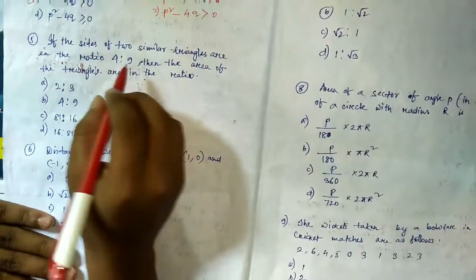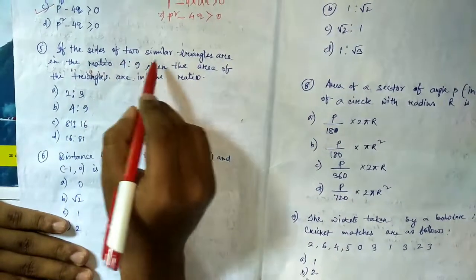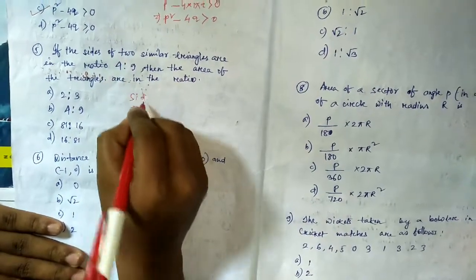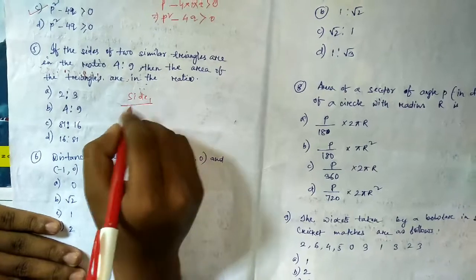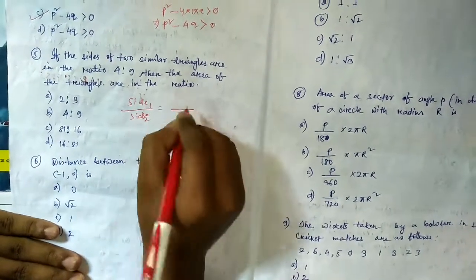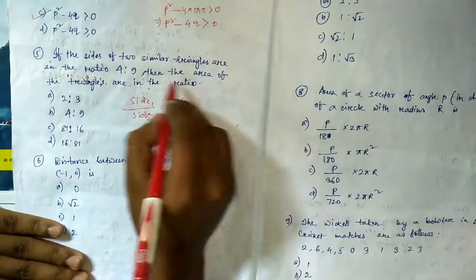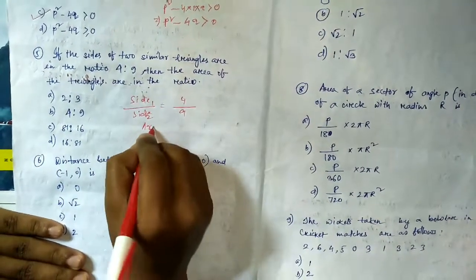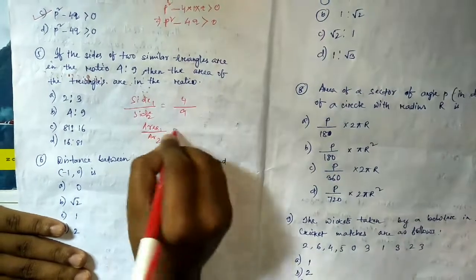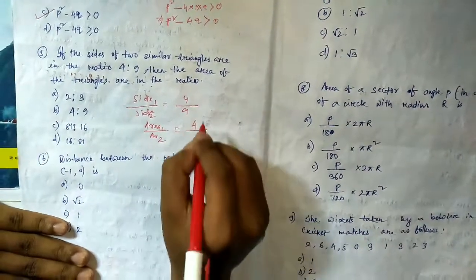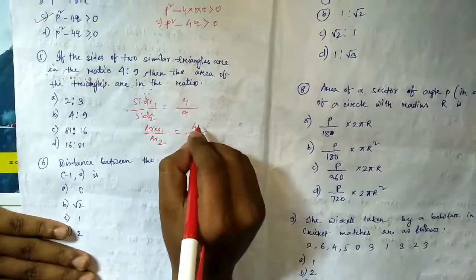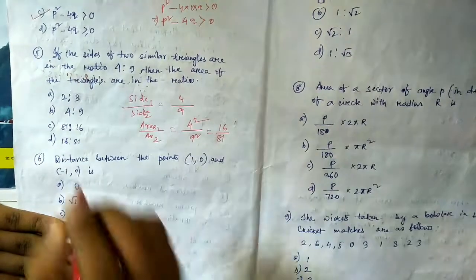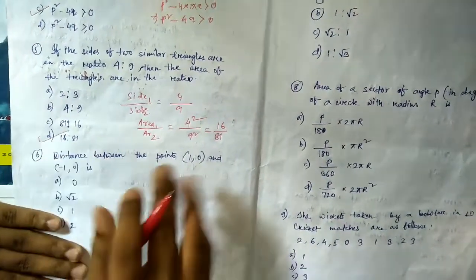Question number five: if the sides of two similar triangles are in the ratio 4 by 9, find the ratio of their areas. The area ratio equals the square of the side ratio. So area₁ by area₂ equals 4² by 9², which gives us 16 by 81. The answer is 16:81.